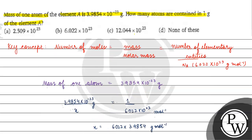Coming back to the question, the correct answer is Option D — none of these — because Option A gives 10 raised to the power 23, but our answer is 2.509 into 10 raised to the power 22. Options A, B, and C are wrong. That's why we chose none of these. I hope you understood it well. Thank you, all the best.